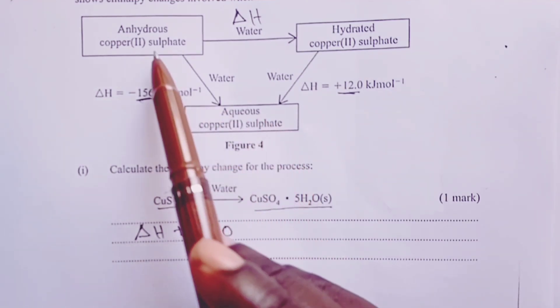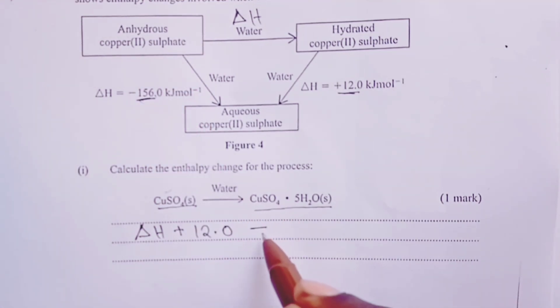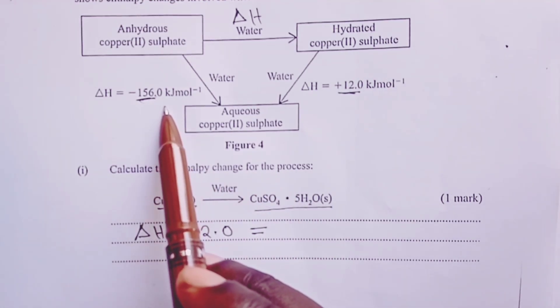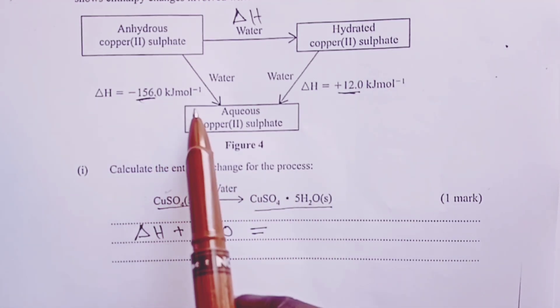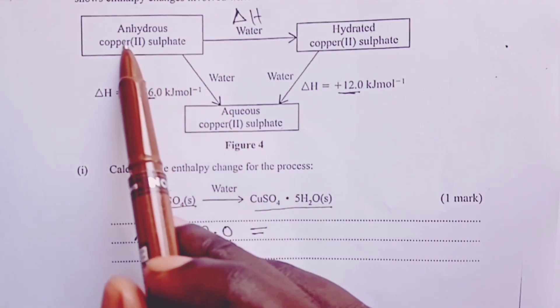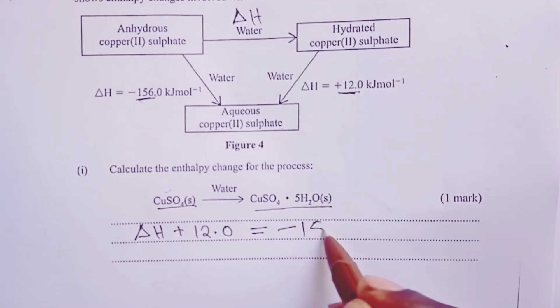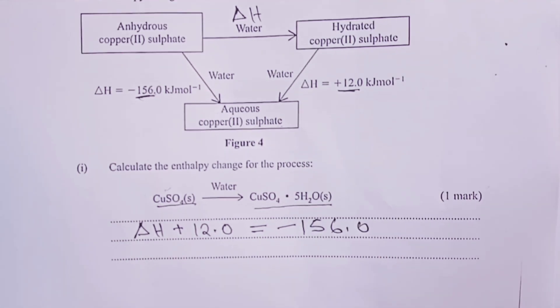These two represent our second route through which you can get aqueous copper(II) sulfate from anhydrous copper(II) sulfate. This should give the same amount of energy as the energy involved when the aqueous copper(II) sulfate is obtained directly from the anhydrous one. So we shall write the relation: ΔH + 12.0 = -156.0 kilojoules.